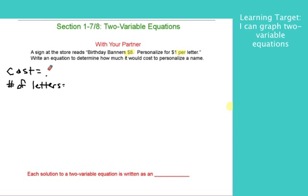Now, when we don't know something in algebra, we give it a letter. So cost, I'm going to call C. And the number of letters, that independent variable that you get to decide on, is going to be called X.